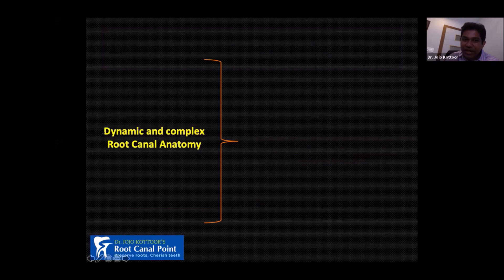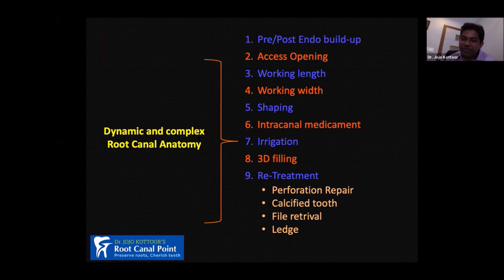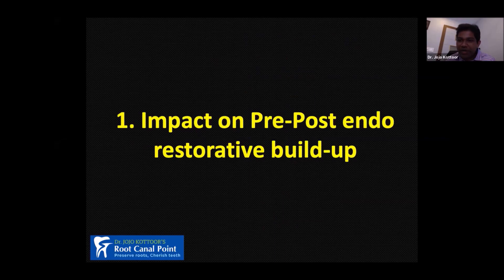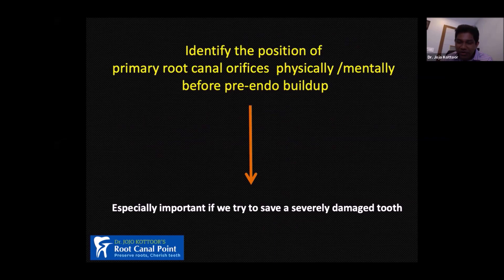Now let's discuss how this dynamic and complex root canal anatomy influences the various steps of root canal treatment from pre-operative buildup to retreatment. First is the impact of pre-endodontic buildup. My key message is: identify the position of primary root canal orifices physically and mentally before the pre-endodontic buildup — especially when there is proximal decay. If you remove decay and try to fill that proximal box with composite, there is a high chance the composite will occlude some primary canals, making it very difficult to get into that canal later.